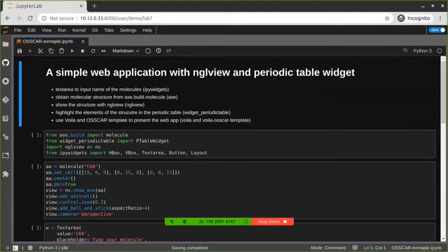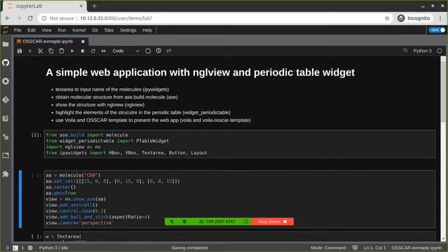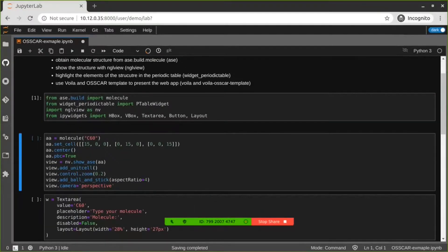First, we need a text area to input the name of the molecules, which is from the ipywidget. We also want to highlight the elements of the structure in the periodic table widget. We use Voila and our OSCAR template to present the web app. In the first step, we just load all the Python packages. We need ASE, we need widget periodic table, NGLView, and ipywidgets. We create the NGLView visualizer with fullerene as a default structure. We get the fullerene structure from the molecule function. We set the cell, we center it, and send it to the NGLView visualizer.